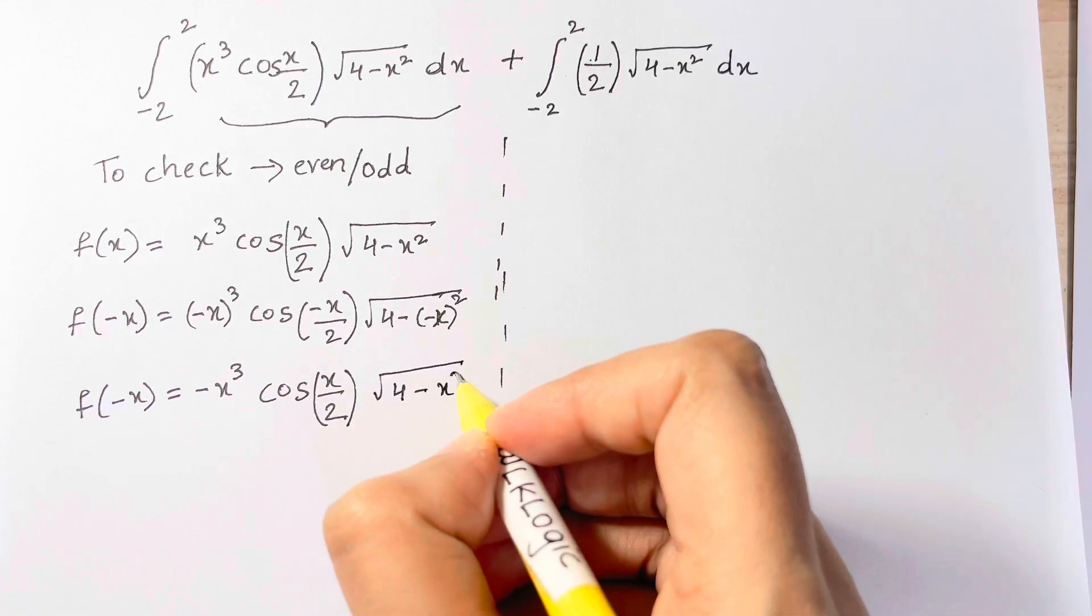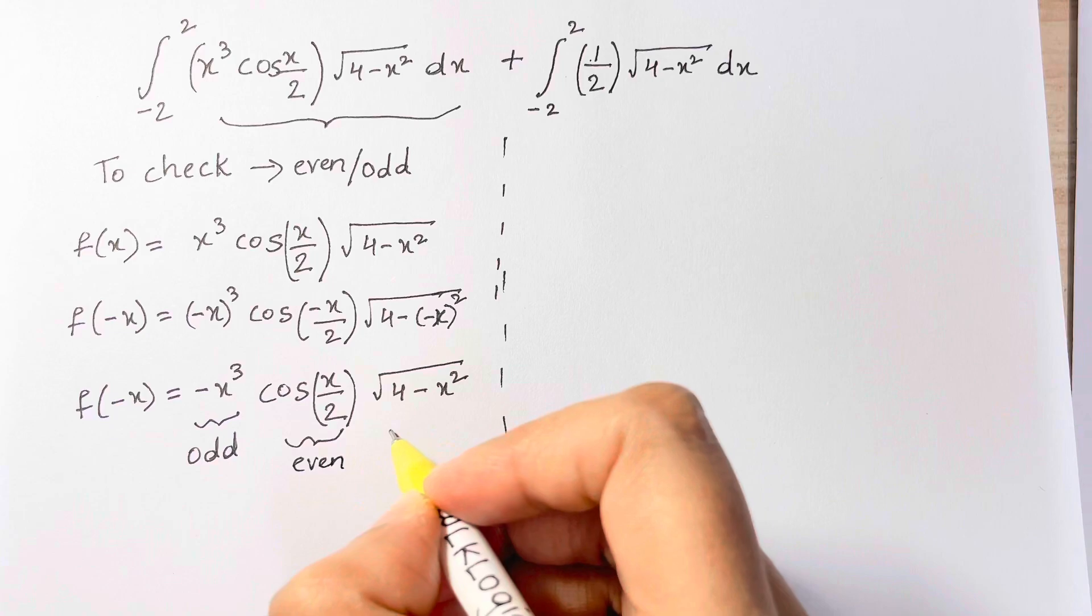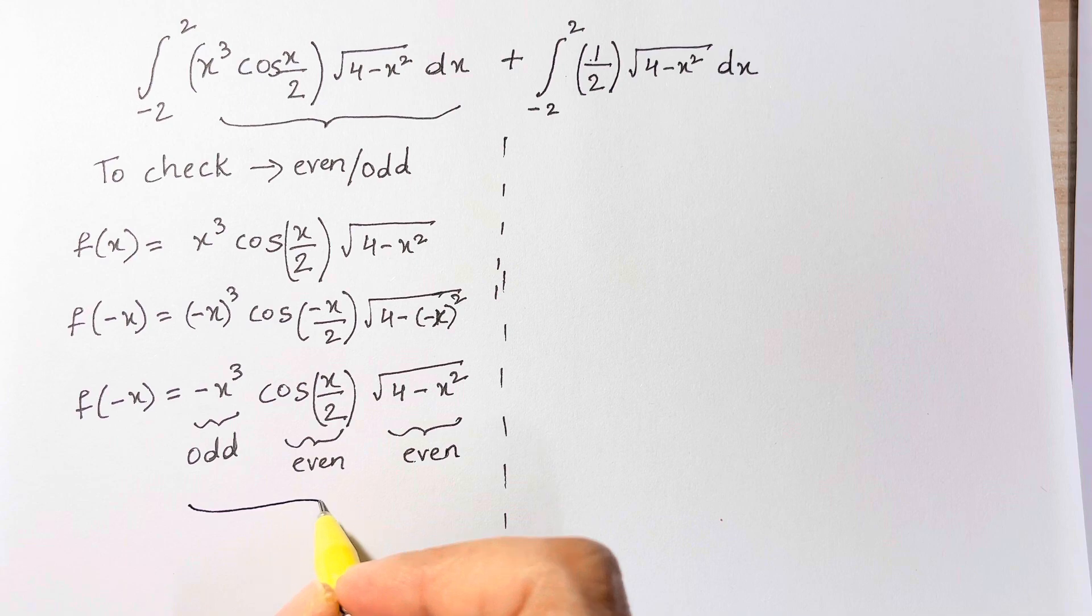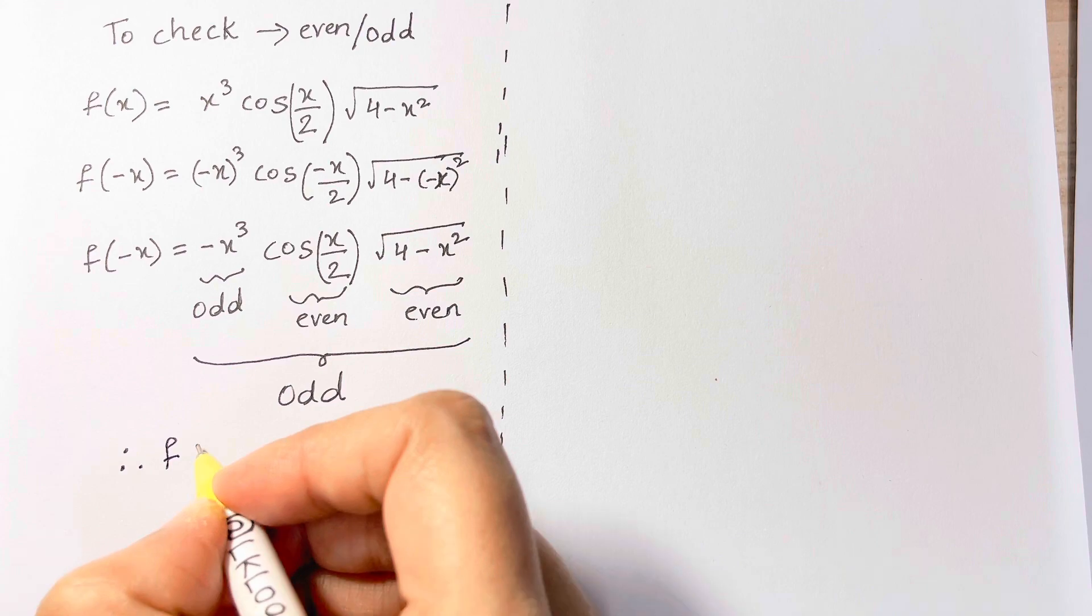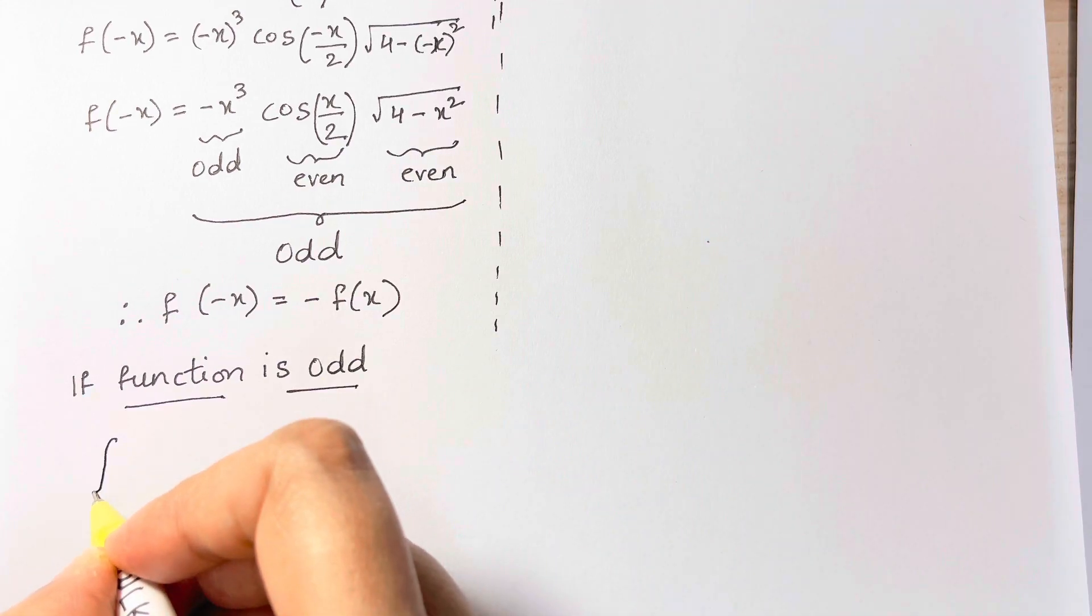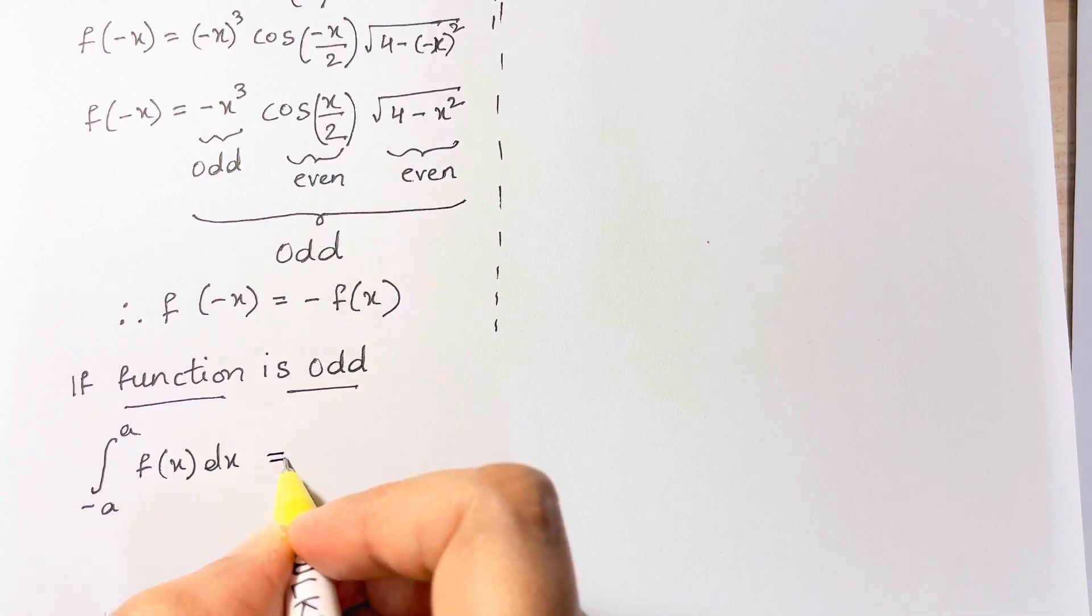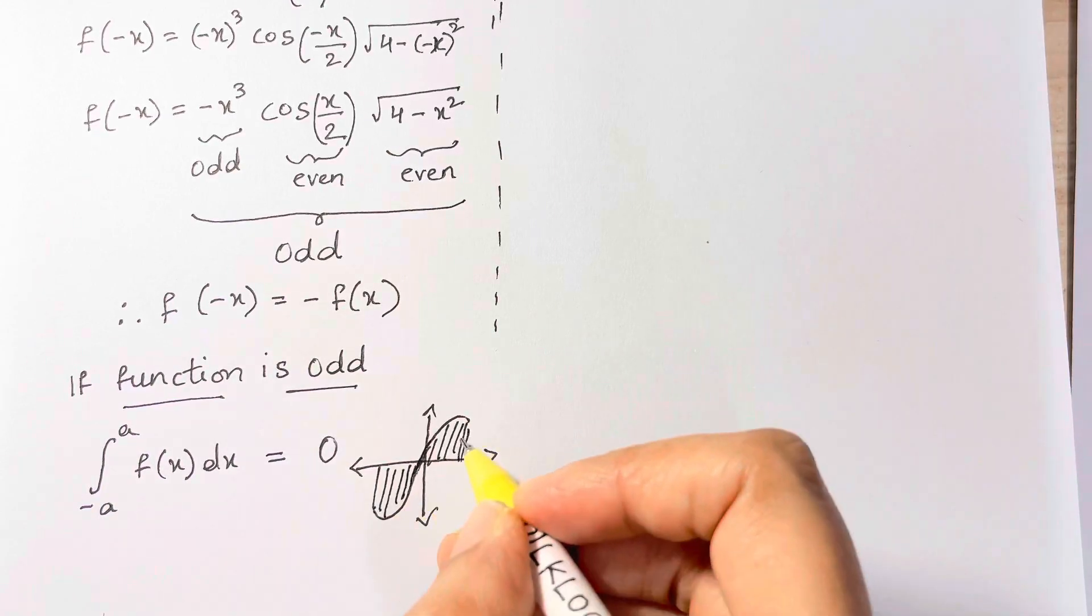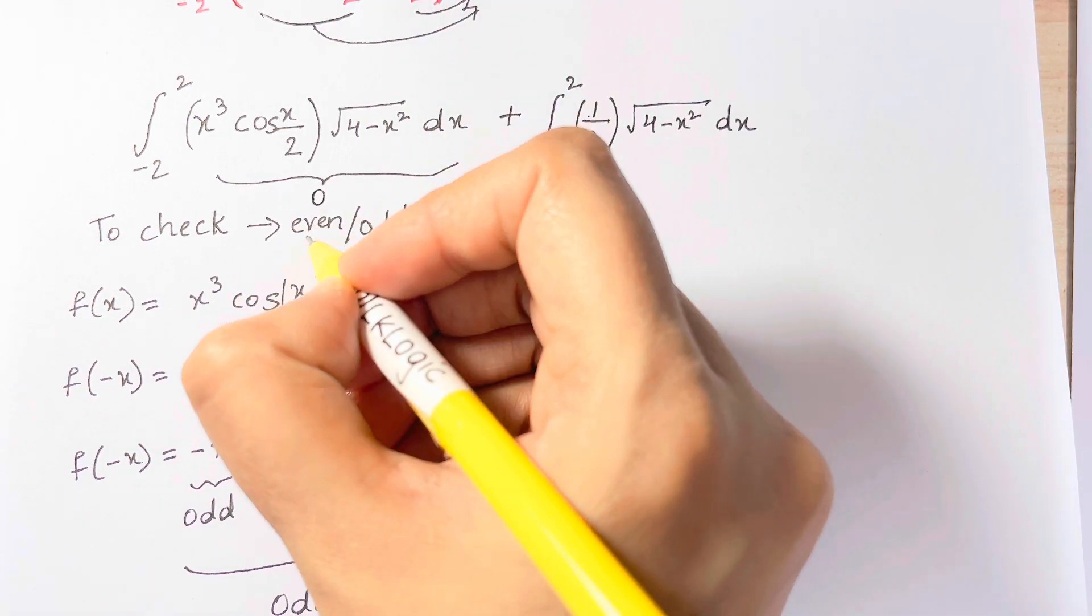So -x³ is an odd function, cos(x/2) is an even function, and √(4 - x²) is an even function. We can put these all together to conclude the product of these functions is also an odd function. Therefore f(-x) = -f(x). Now if the function is odd, recall the integral of an odd function over a symmetric interval from -a to a is zero, because half the area is negative; the areas above and below the x-axis are equal. This means this entire integral vanishes and equals zero.